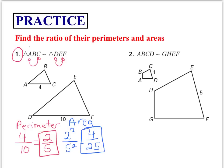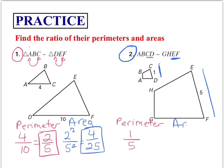Now let's look at the diagram on the right for number 2. We're given CD and EF, so the ratio of the perimeters is 1 over 5. The ratio of the areas is 1 squared over 5 squared, which gives us 1 over 25.